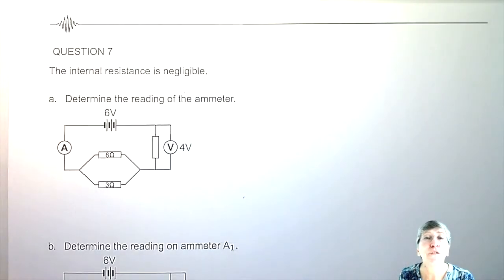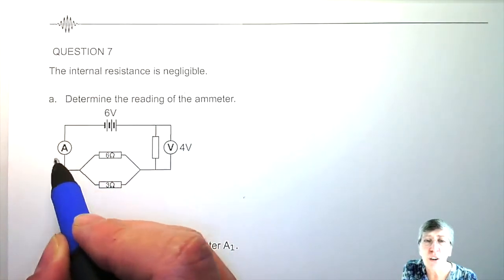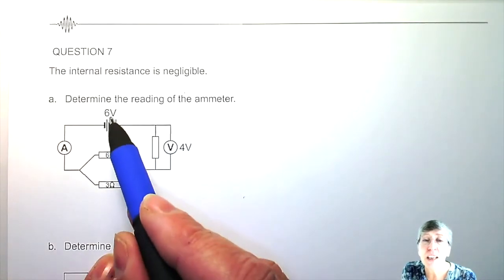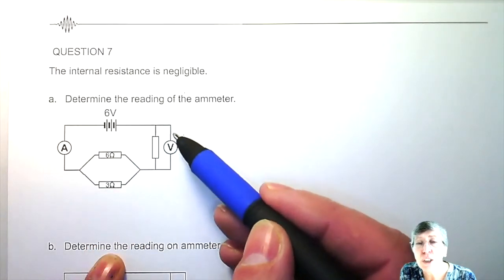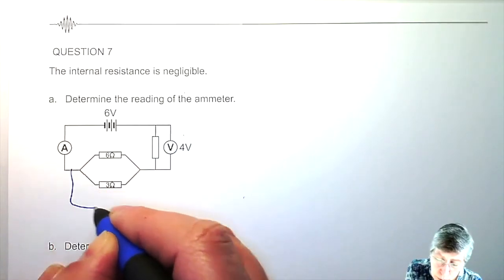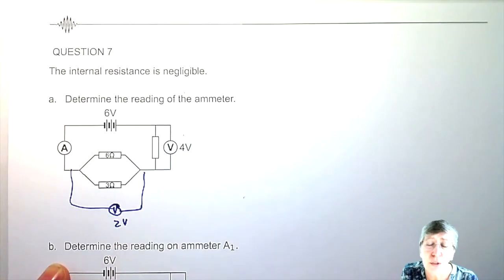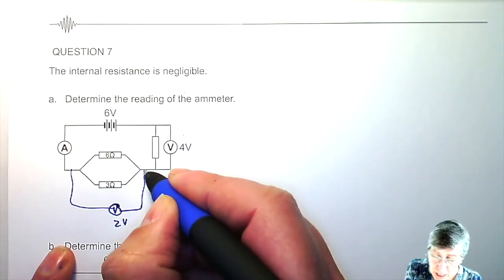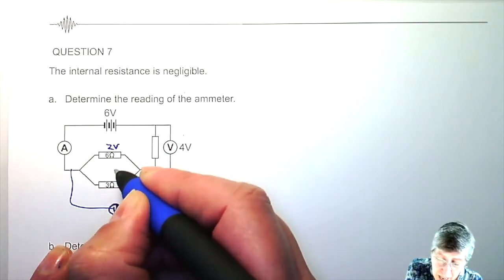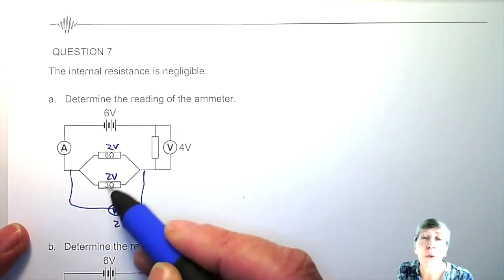Now let's do a few examples of how we apply Ohm's law to a circuit. First, they're asking for the reading of the ammeter. They're putting 6 volts into the circuit, and one part is using 4 volts, so I know the whole parallel part is going to use 2 volts. And if you have 2 volts over the whole parallel, then it's true for the top branch and also true for the bottom branch.